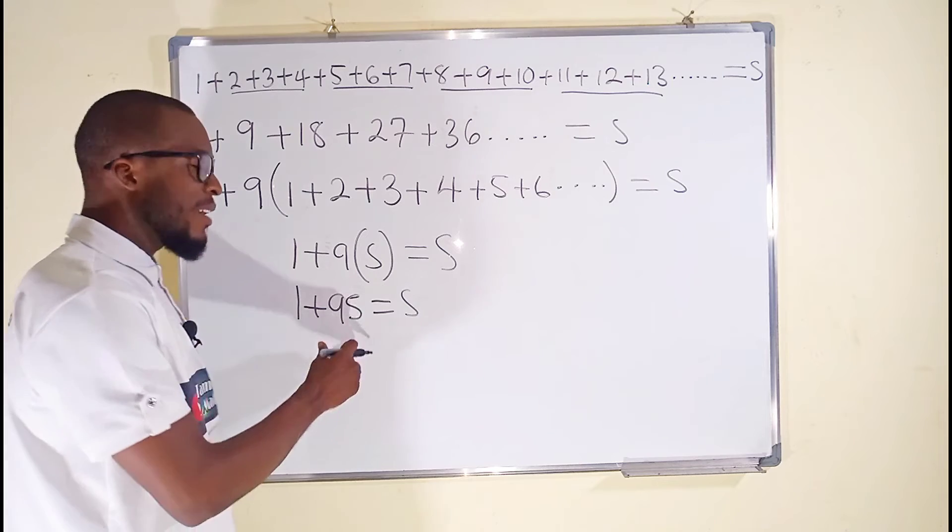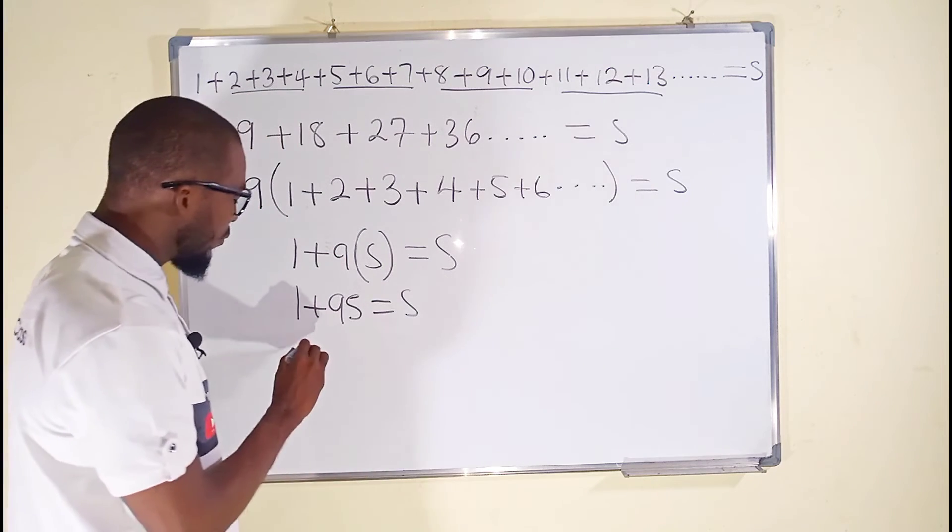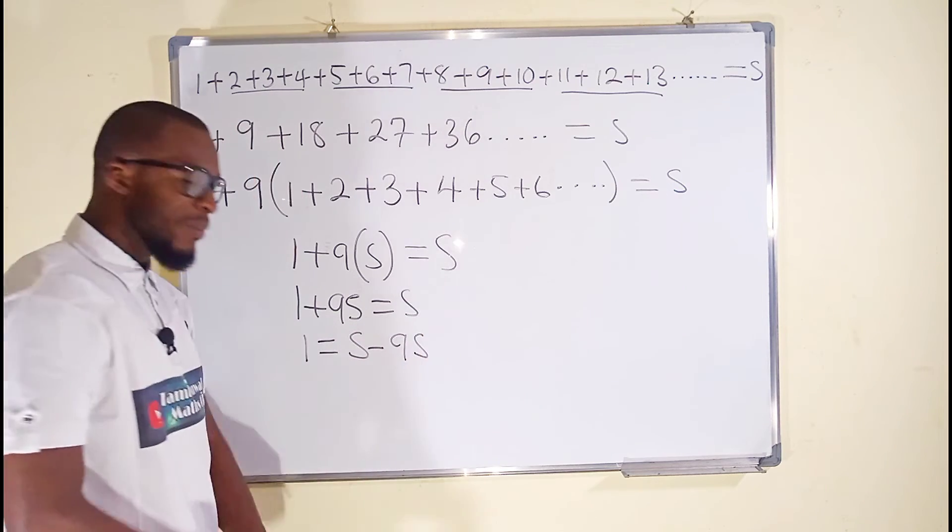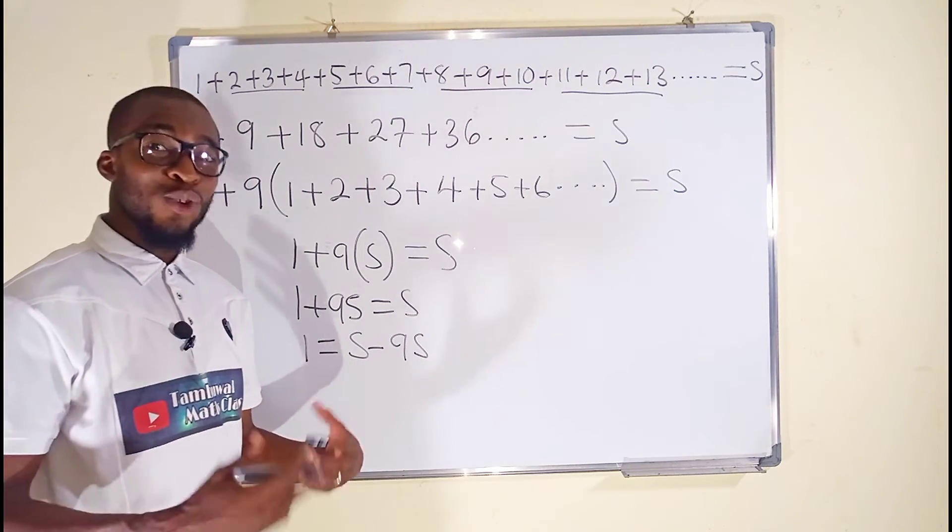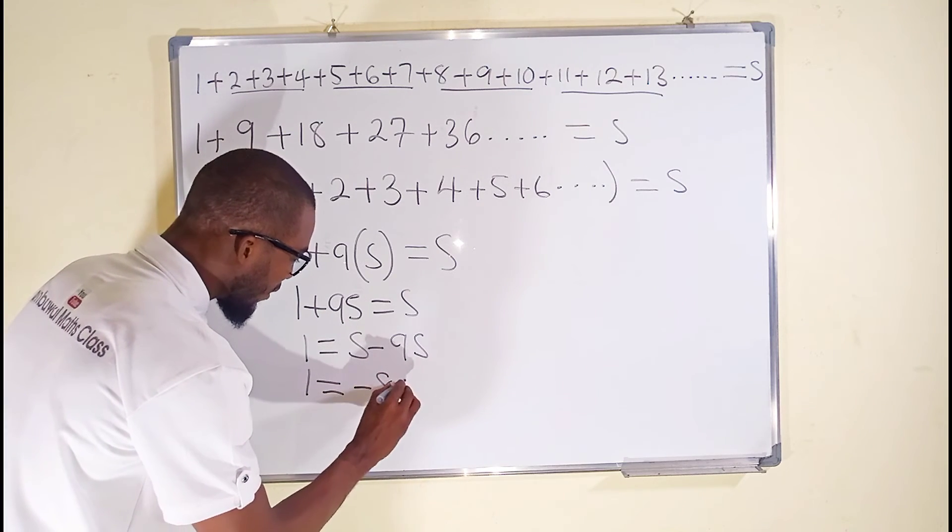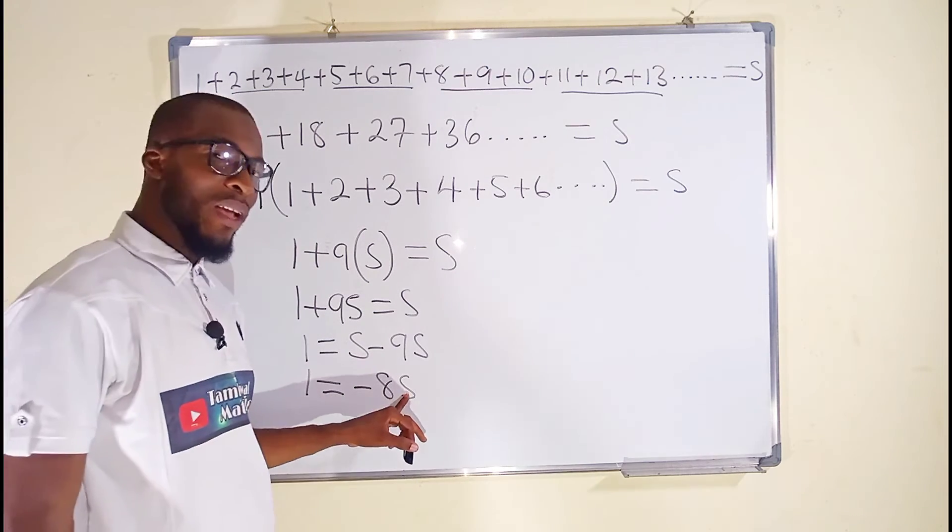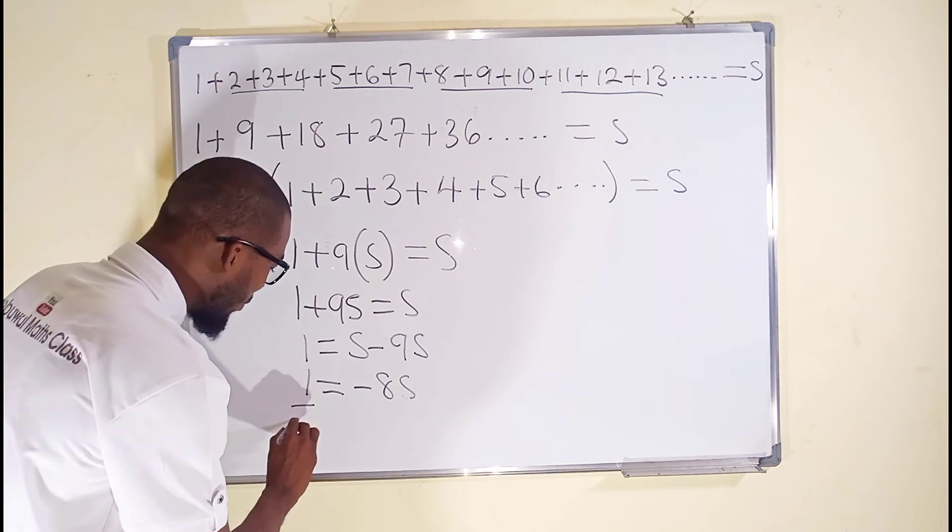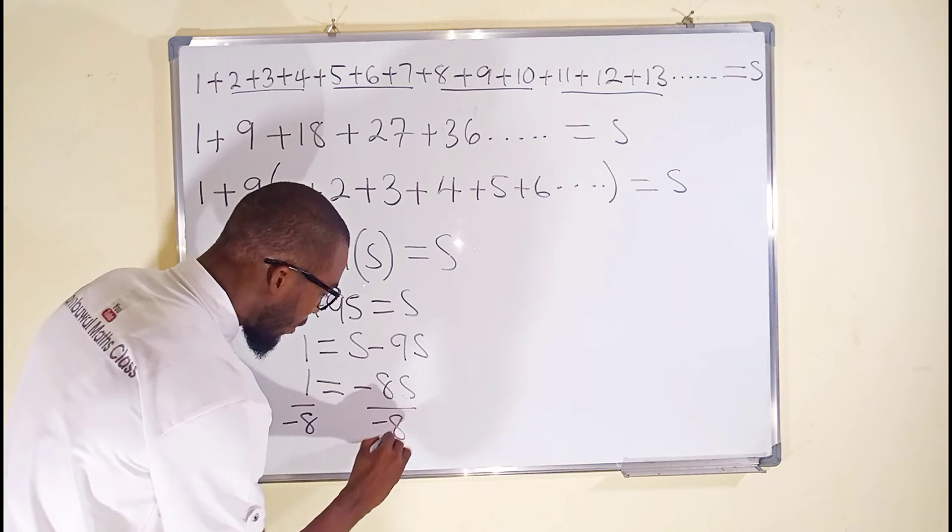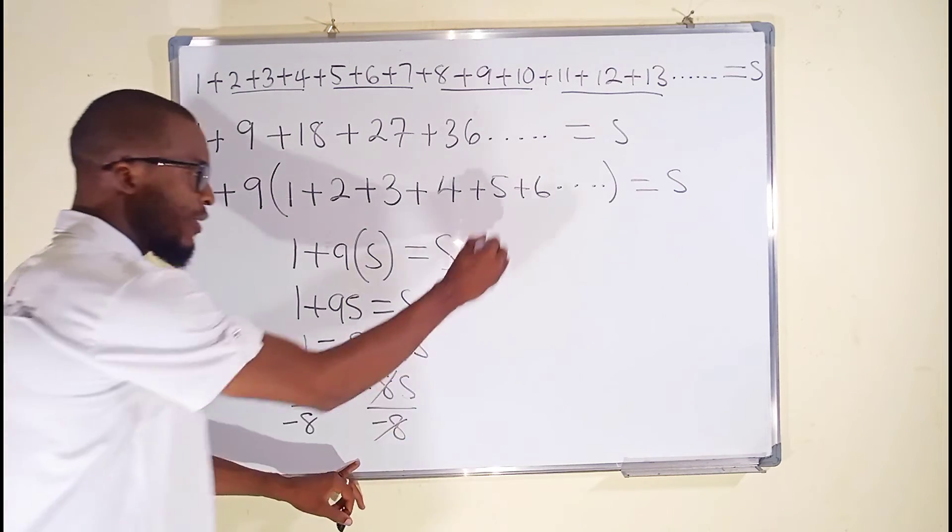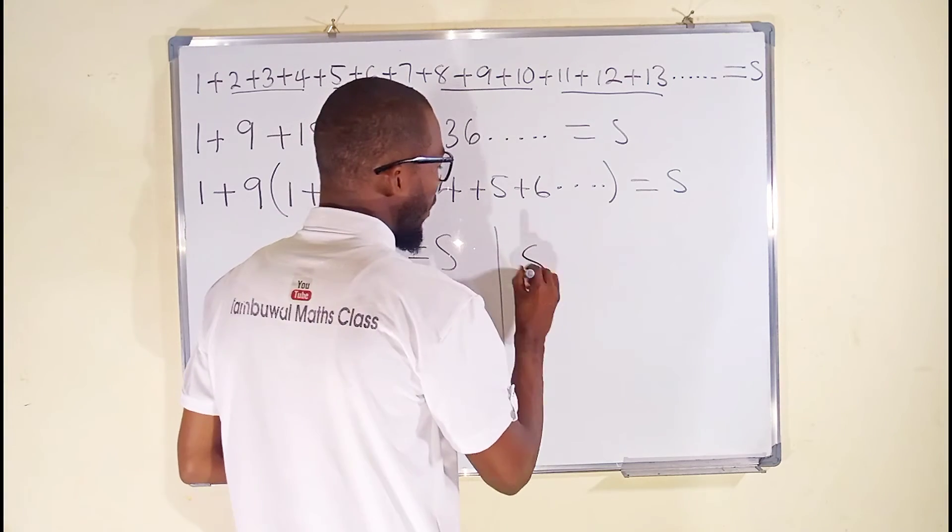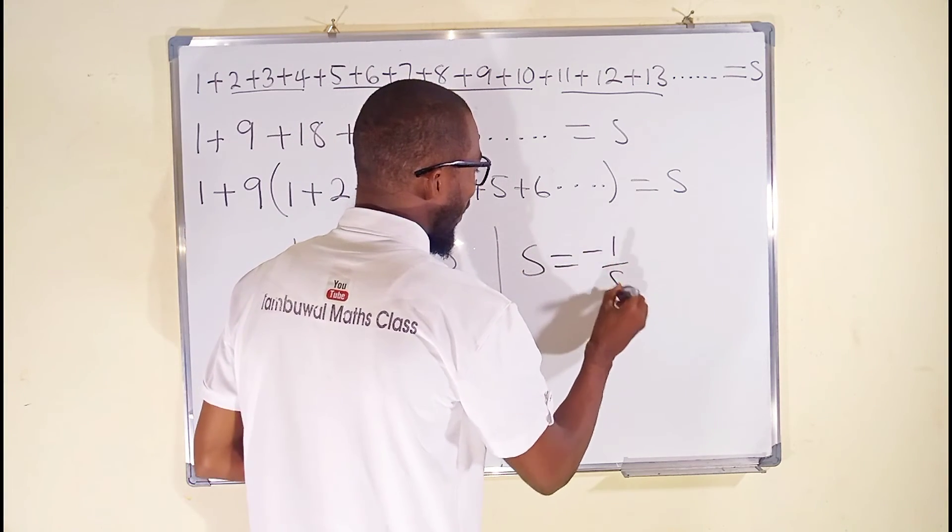So we are going to solve for S. That 9S to the right, it becomes negative. We have 1 = S - 9S. And S - 9S is equal to negative 8S. So we have 1 = -8S. Our main target is to solve for S. So now we can divide both sides by negative 8, which is the coefficient of S. This will cancel this. Finally, you can see that S is equal to -1/8. S is equal to -1/8.